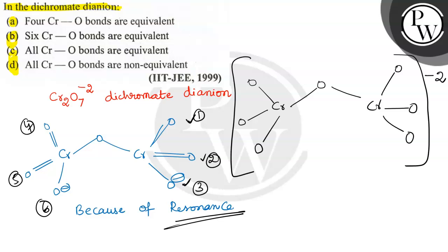These six Cr-O bonds are equivalent because the negative charge can be changed to the second or first one. Not the bridge—this is the bridge oxygen which joins the two metal atoms.